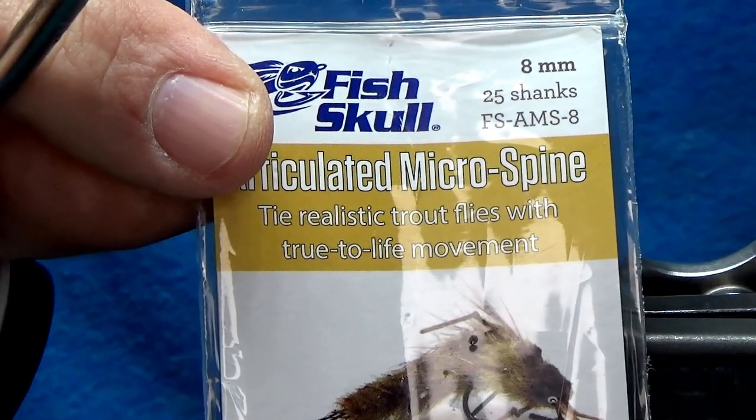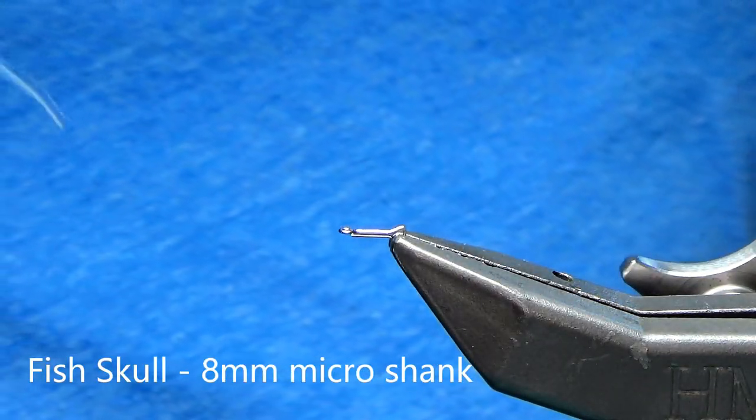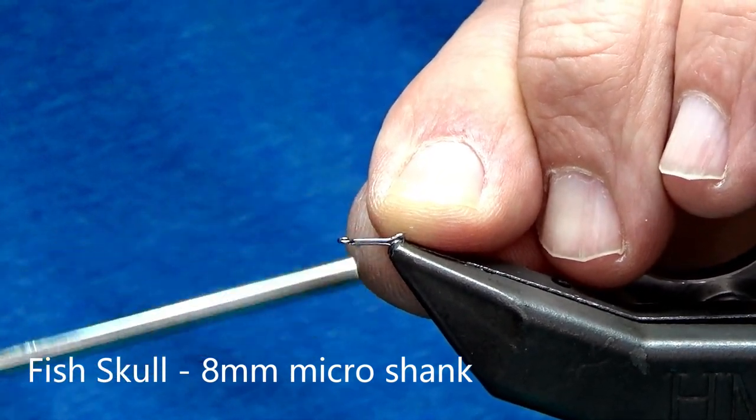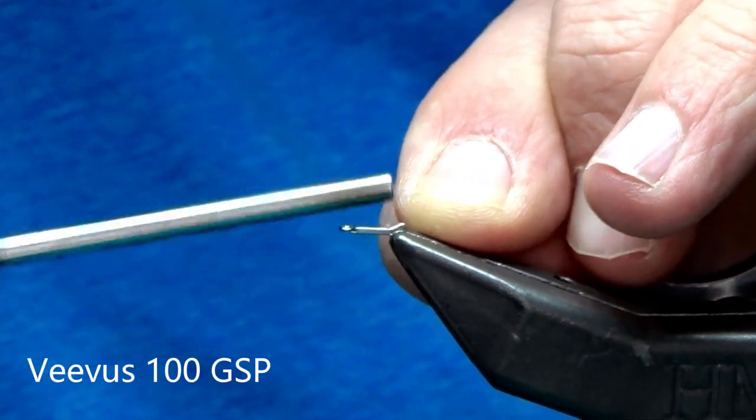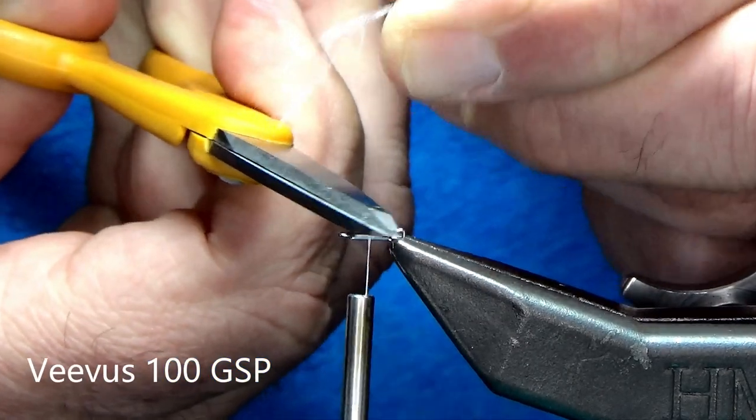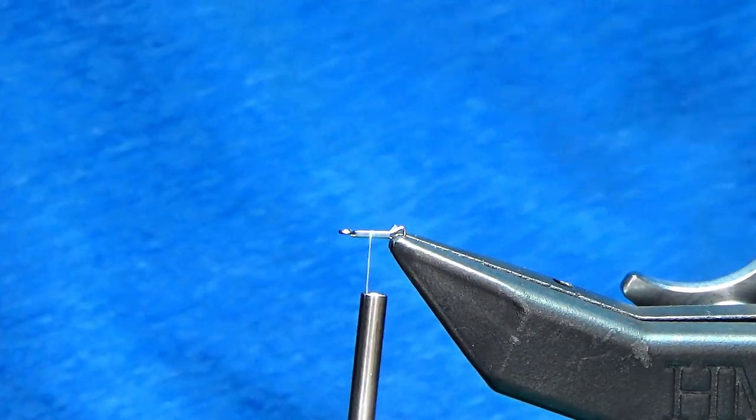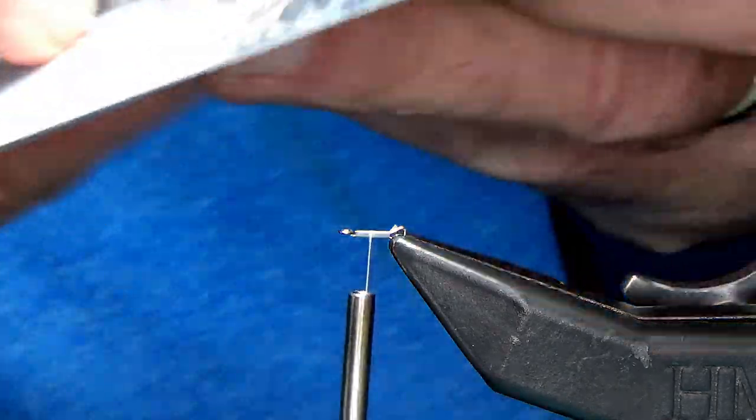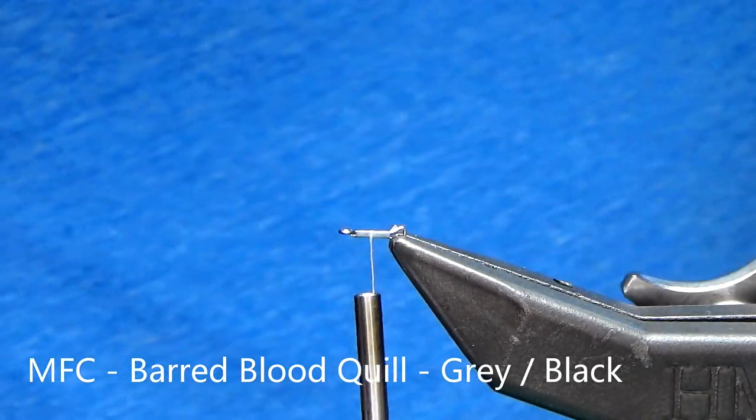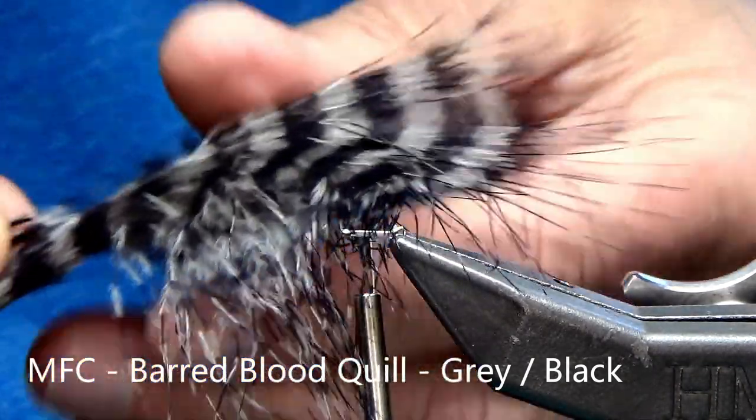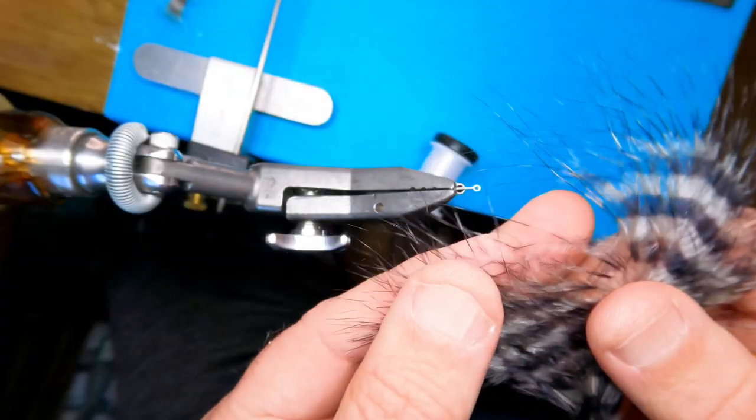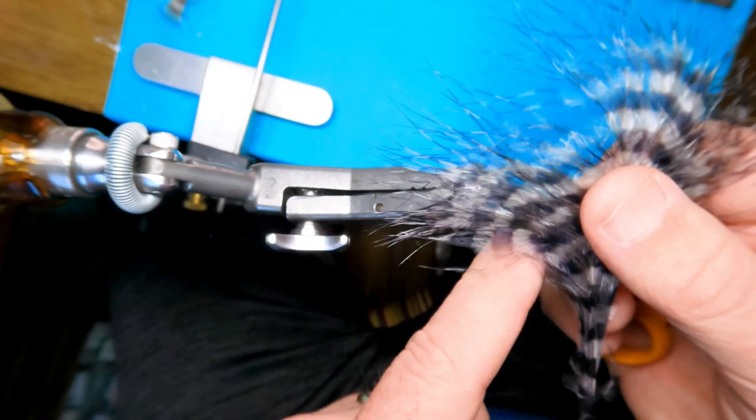Okay, so let's get tying. We're going to start with an 8mm micro shank. This is from Fish Skull and I'm using Veevus 100 thread just putting down a nice quick base layer. And for marabou, for the tail, this is MFC Barred Blood Quill. It's gray-black. You could also use standard marabou as well and just happen to have this MFC and I like the barring on it.